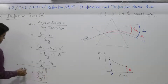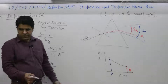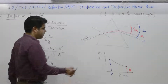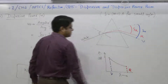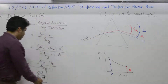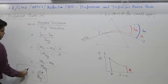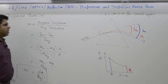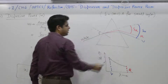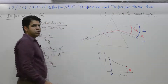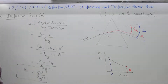Dispersive power: for a non-dispersive medium, the value of nu for violet and red is the same, so d_nu is zero. Therefore, for a non-dispersive medium — if this prism is made of a material for which nu remains constant — omega will be equal to zero.